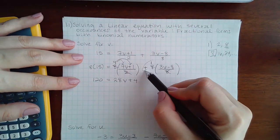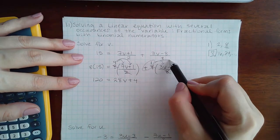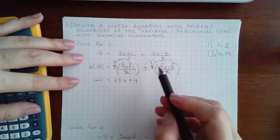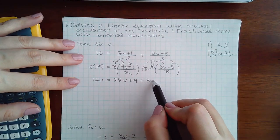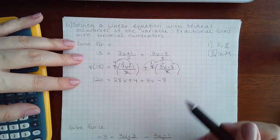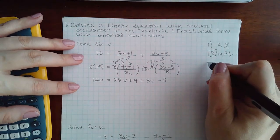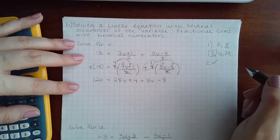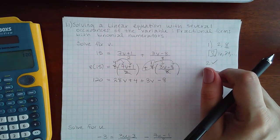Now here you have a positive 1 that needs to get distributed. So positive 1 times 3V is positive 3V. And positive 1 times negative 8 is negative 8. Then we have, and we already eliminated the parentheses, so step 2 is already done.